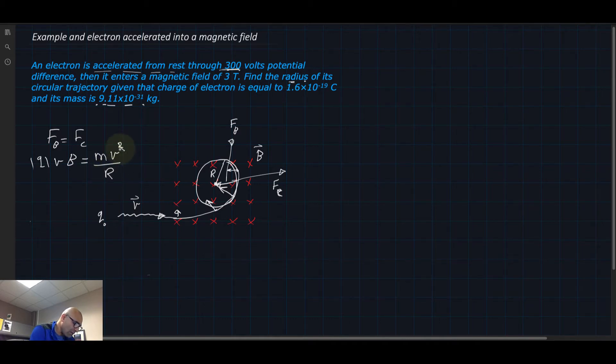If we want to write the radius, we can rearrange the equation. We find the radius equals m times v divided by the charge multiplied by the magnetic field B in the denominator.